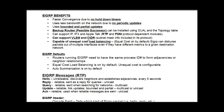EIGRP can support IP, IPX, and AppleTalk using RTP and PDMs — protocol-dependent modules, which can be installed. It supports variable-length subnet masks and classless inter-domain routing; subnet masks are included in the protocol so you can configure classless subnet masks. It's also capable of unequal cost load balancing — if you have multiple paths of unequal cost to a destination network, you can configure EIGRP to send packets out of multiple interfaces even if those interfaces have different metrics.